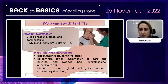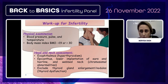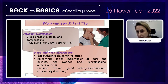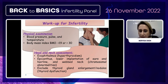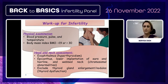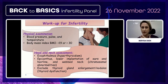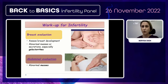Physical examination is essential. We check blood pressure, pulse, temperature, and body mass index. Head and neck assessment is important — looking for exophthalmos, signs of hyperthyroidism, low-set ears, hairline suggesting chromosomal abnormalities, and thyroid gland enlargement or nodules. Breast evaluation is also important — assessing development, abnormal masses, and secretions, especially galactorrhea.